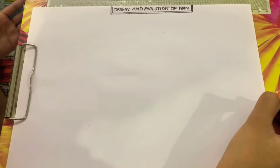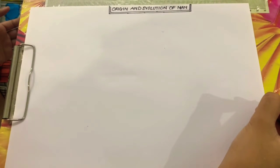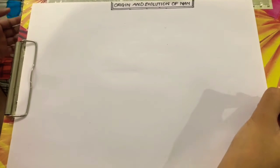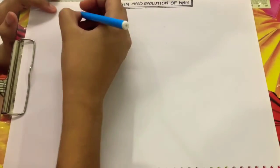Today we'll be taking a short topic from the chapter on Evolution from Class 12. It's the last topic, Origin and Evolution of Man, and it's a very hard topic to remember.